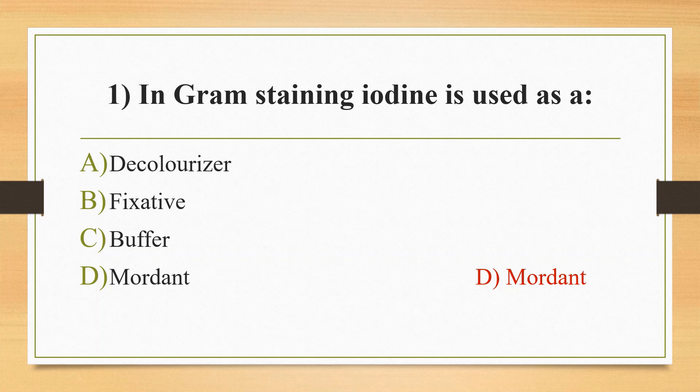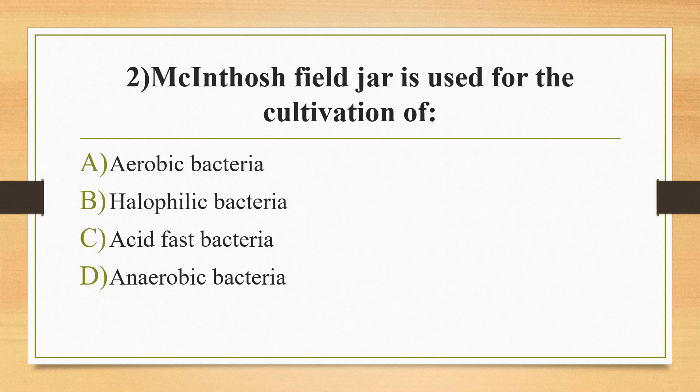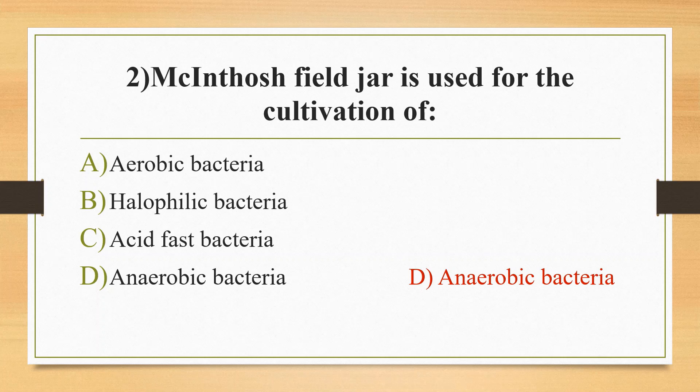Second question: McIntosh filter is used for the cultivation of option A aerobic bacteria, option B halophilic bacteria, option C acid-fast bacteria, option D anaerobic bacteria. The answer is option D, anaerobic bacteria. McIntosh filter is an anaerobic cultivation method in which evacuation of air and replacement with hydrogen gas occurs manually.